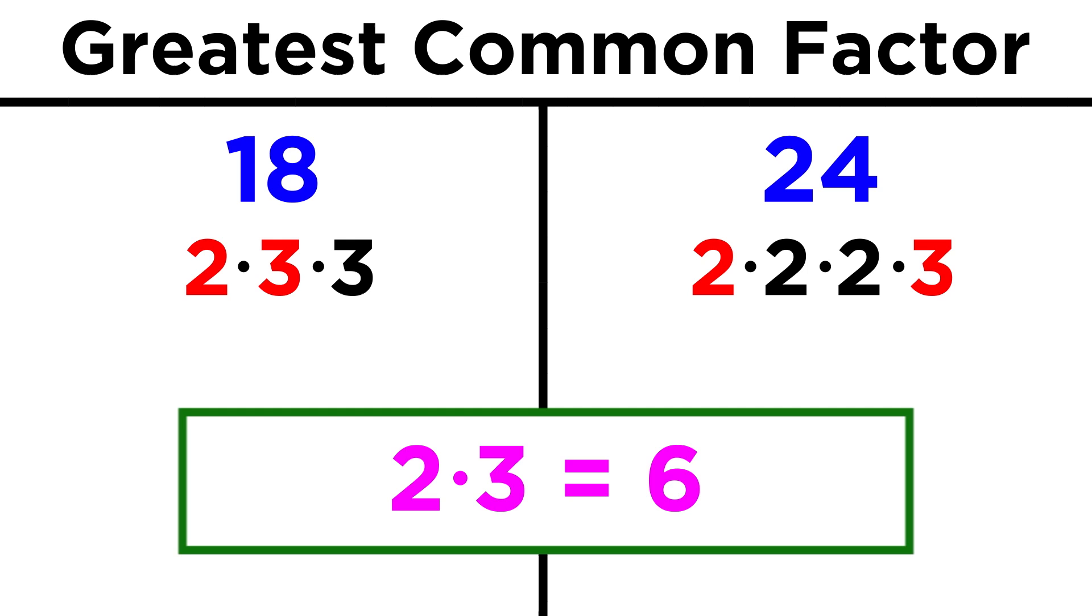Now we take the two and three we pulled aside and multiply them together to get six, which we already knew was the answer.